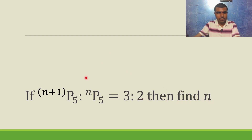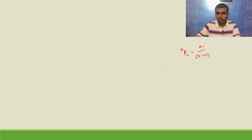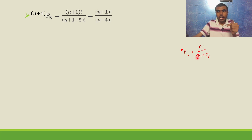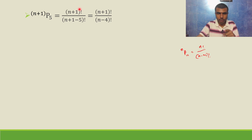First let us find n+1 P5. What is nPr? nPr is nothing but n factorial by n minus r factorial. Now n+1 P5 is obtained by putting n+1 in place of n. So it becomes n+1 factorial by n+1 minus 5 whole factorial, which is n+1 factorial by n minus 4 factorial.